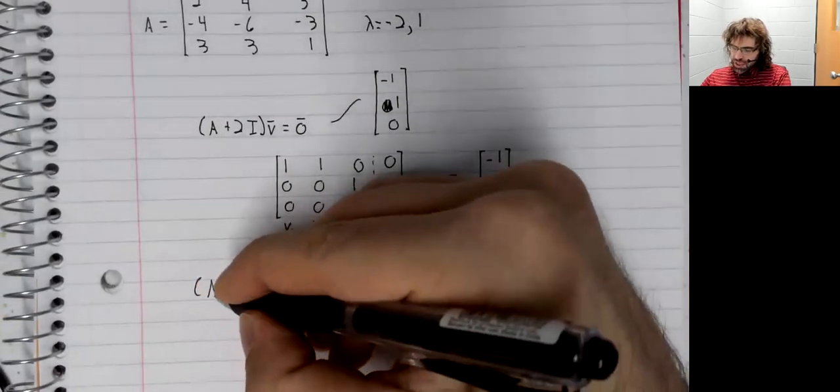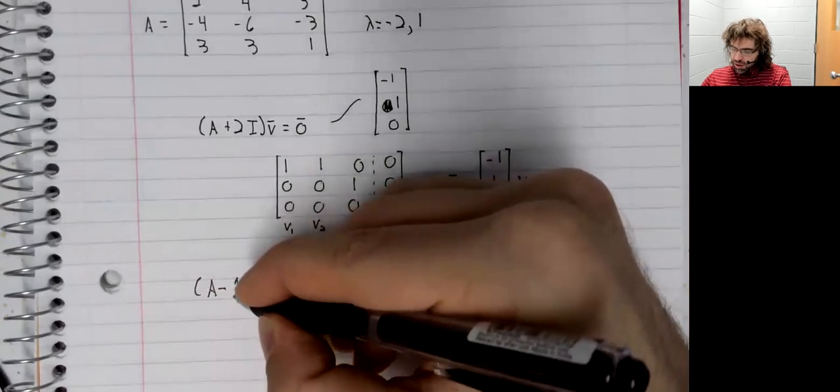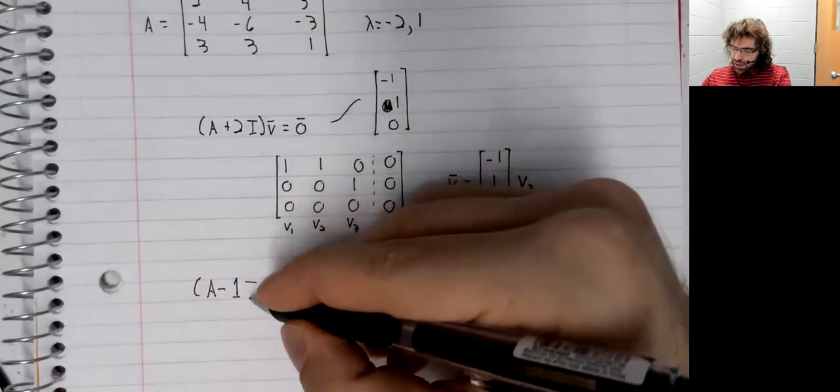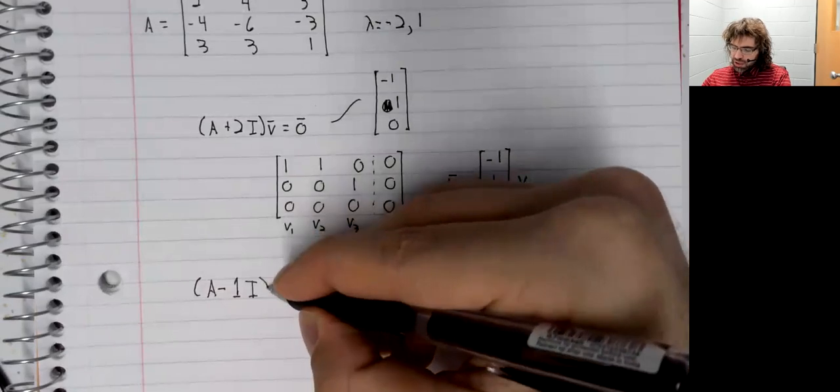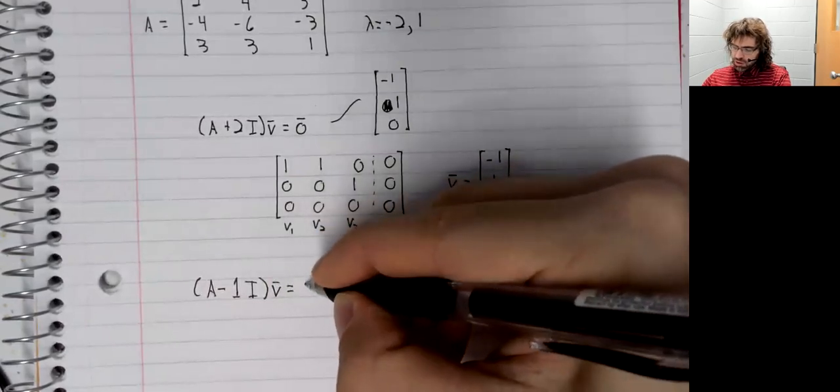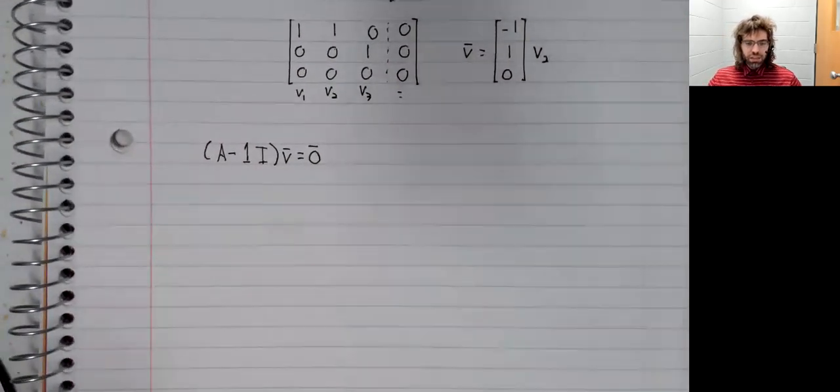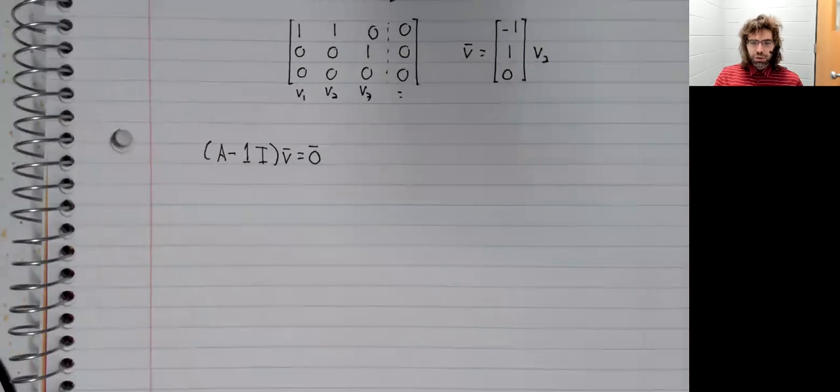We need three linearly independent eigenvectors. So let's move on to our second eigenvalue.